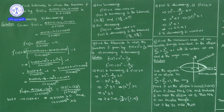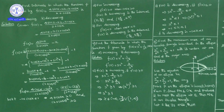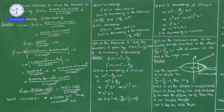For increasing, f'(x) ≥ 0: 3x² − 3/x⁴ ≥ 0, so x⁶ ≥ 1. Writing x⁶ = (x²)³, we get x² ≥ 1, meaning x ∈ (−∞, −1] ∪ [1, ∞).